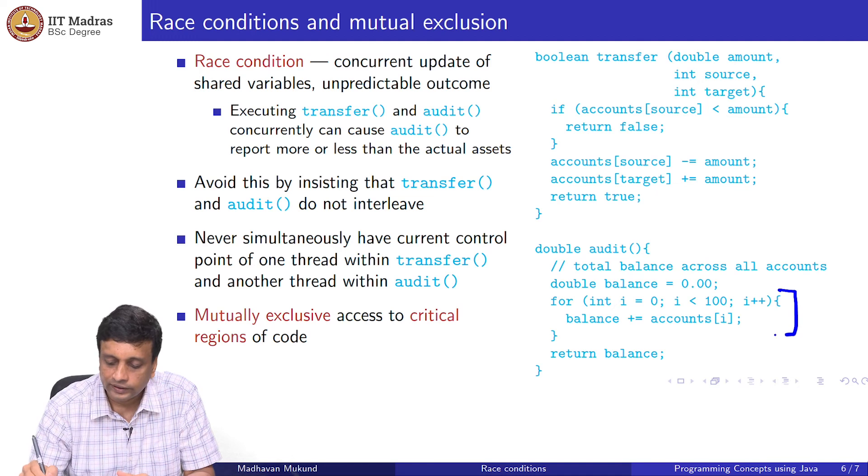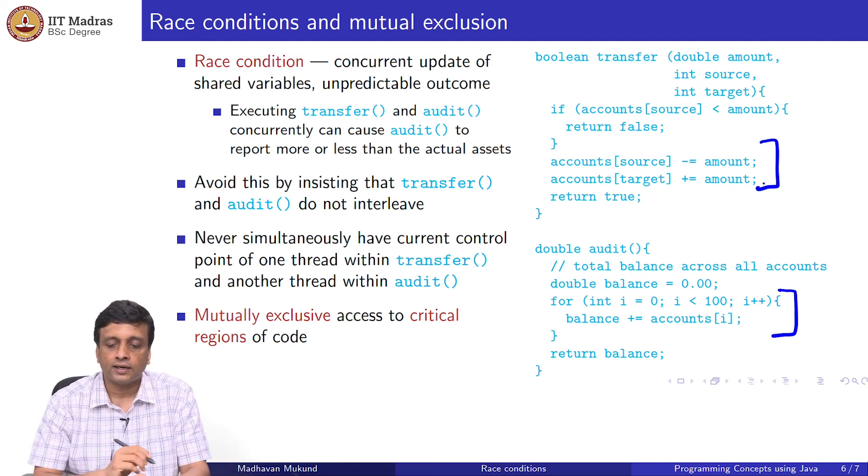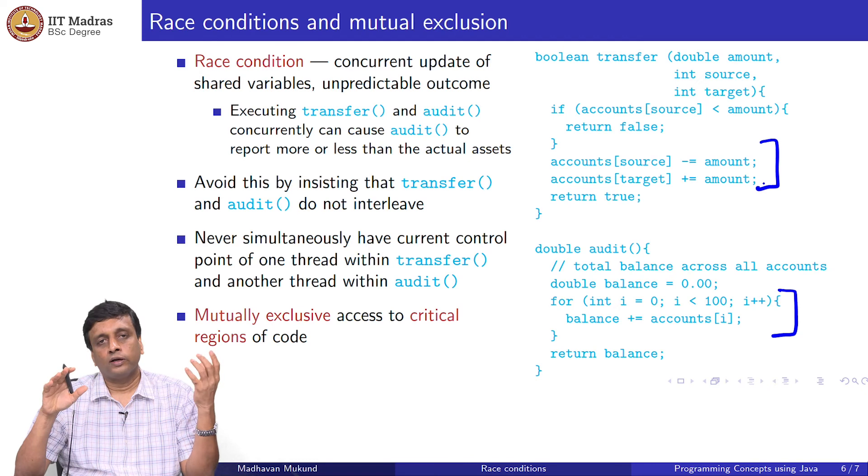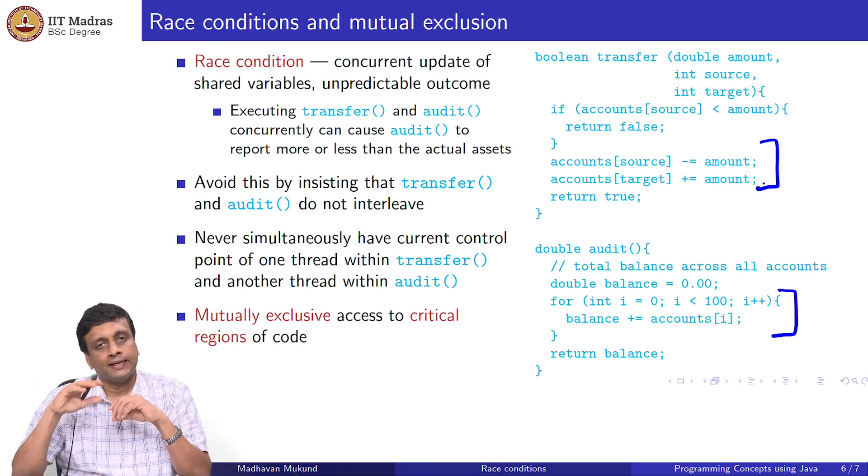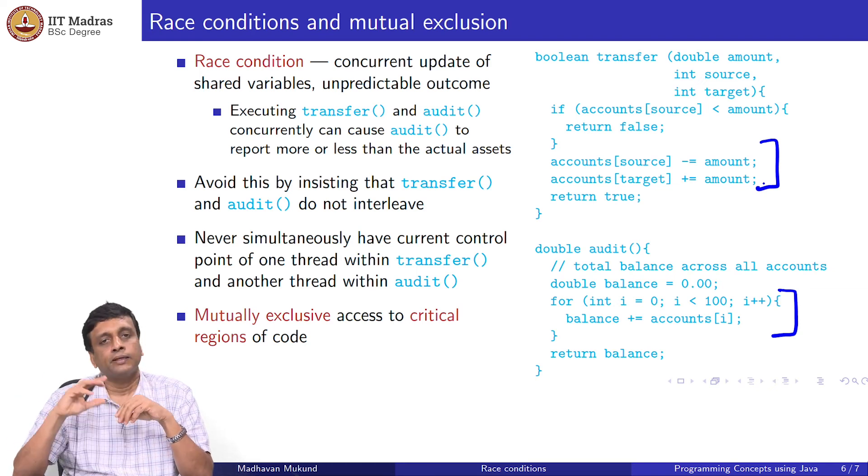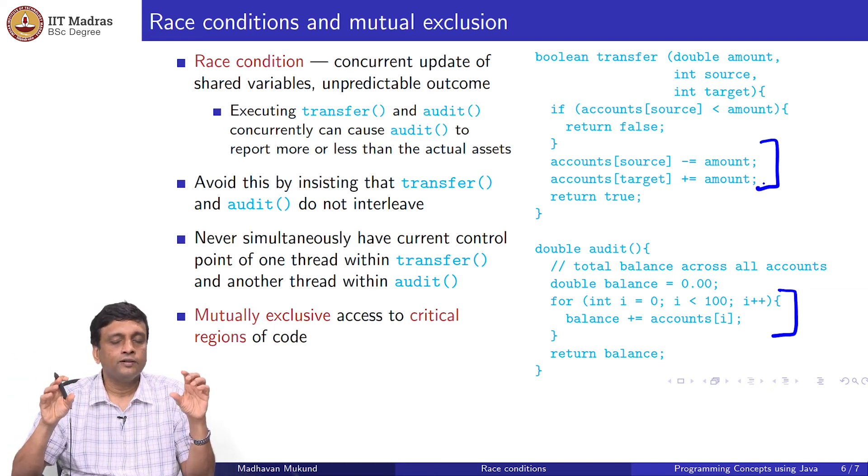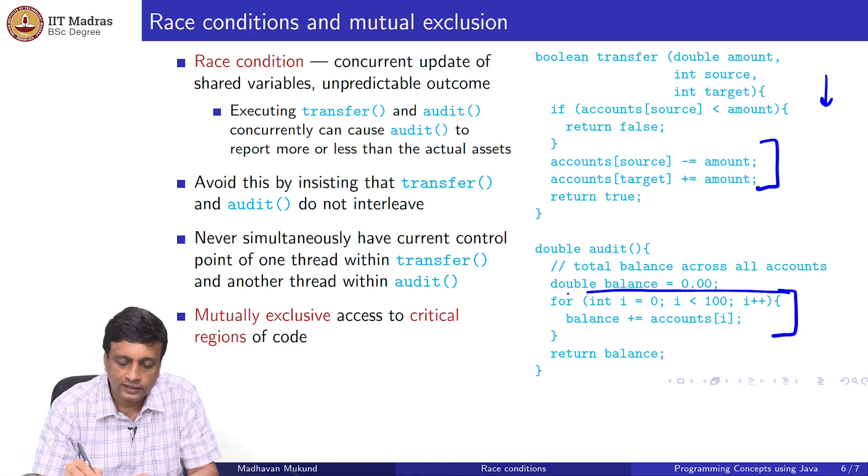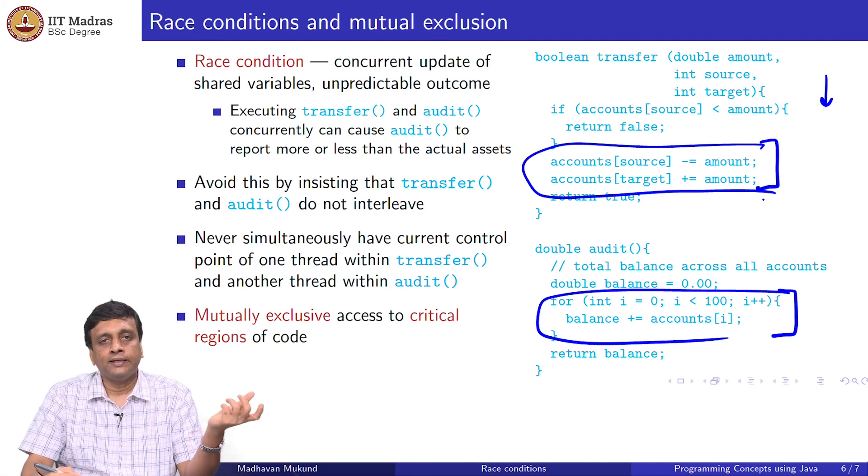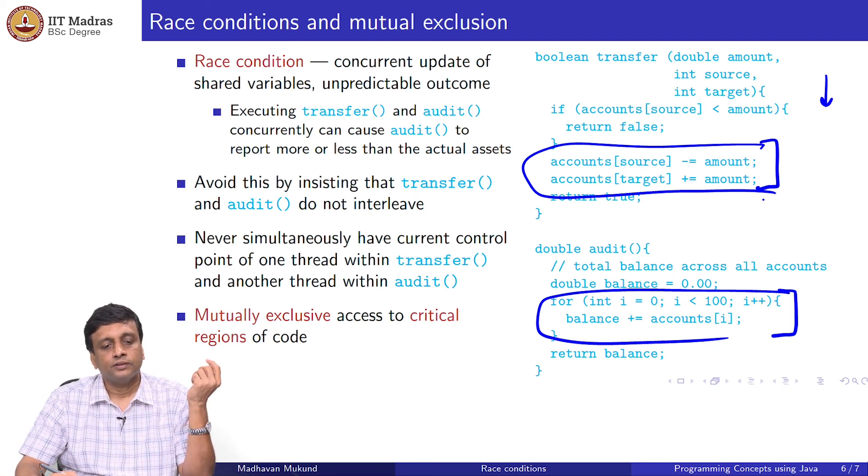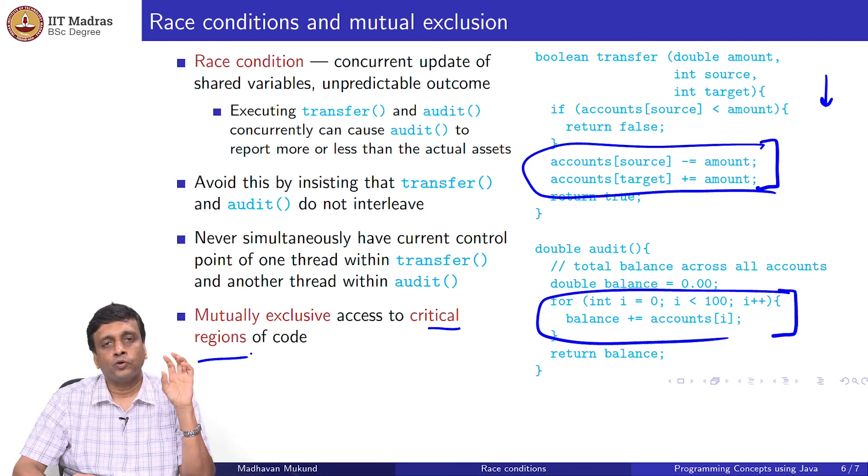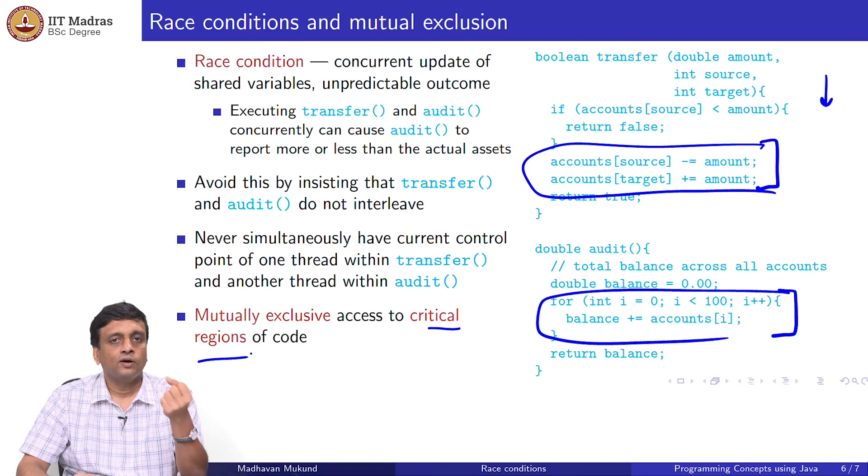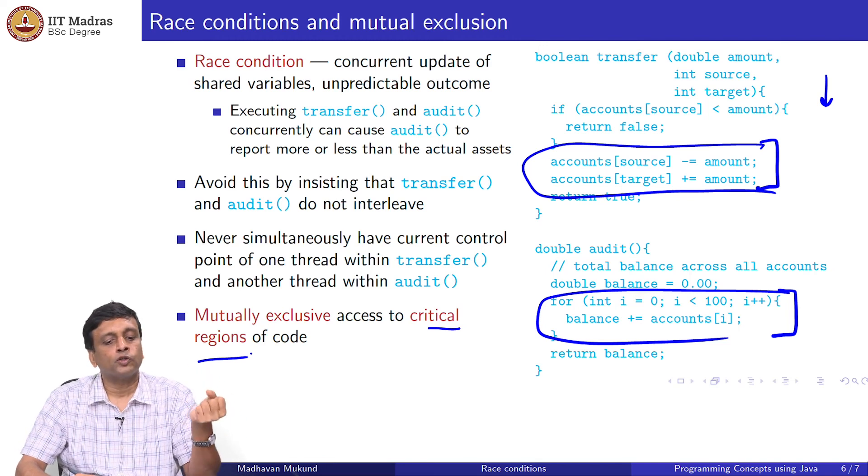This section which deals with accounts and this section which updates accounts are operating on this concurrent shared data. These are what are called critical sections. If I am doing something here and something else is changing it, or if I am changing something here and something else is observing it, then there is a possibility of a race condition. What we want to ensure is that these two should not be inside this section at the same time. If one is updating, the other should not be observing and vice versa. This is called a critical section or critical region.